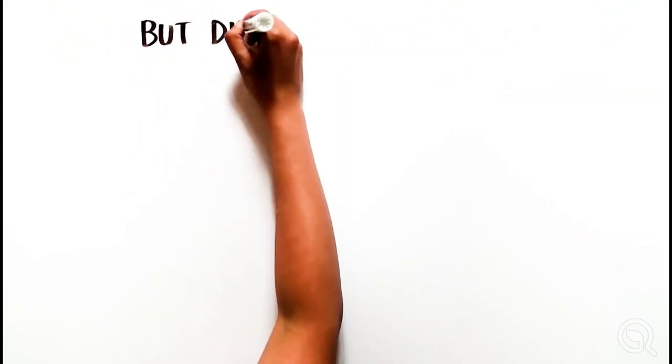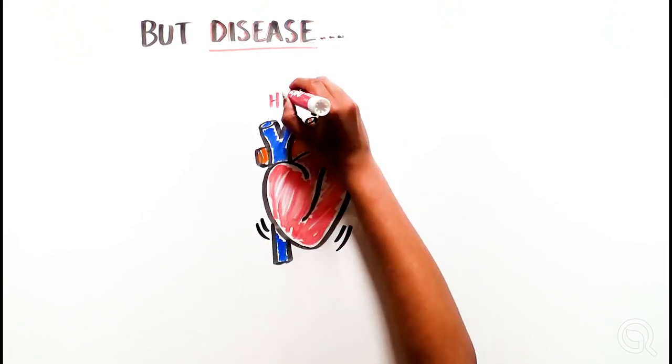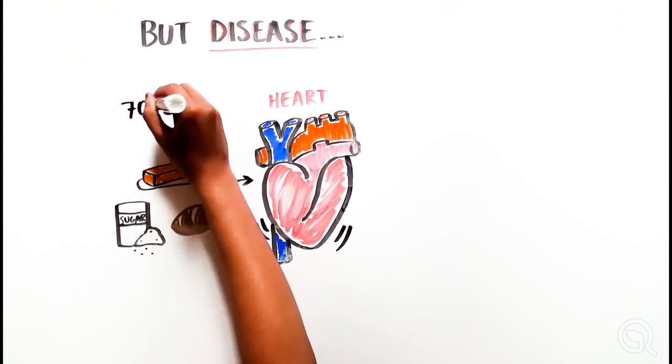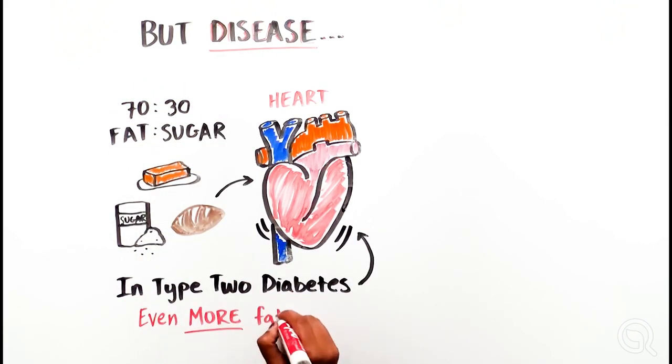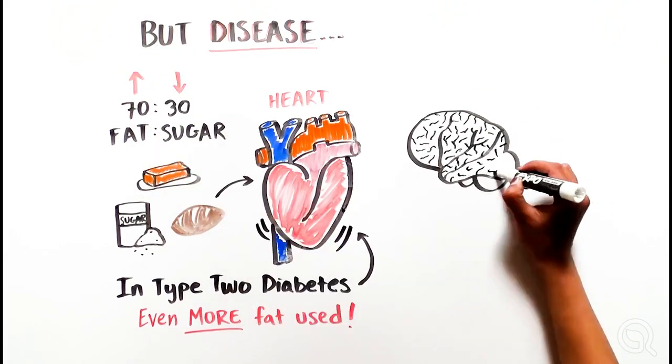When things go wrong, metabolism can be a key factor in disease. For example, the healthy heart uses fats and sugars in a 70 to 30 ratio. But in type 2 diabetes, the amount of fat it uses increases even further, as it responds to the higher levels of circulating fat in the bloodstream.